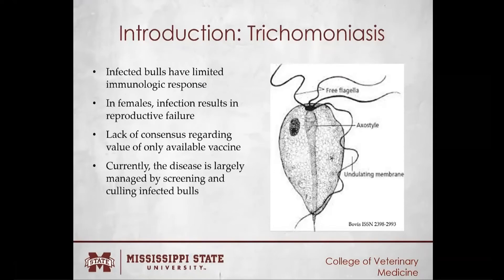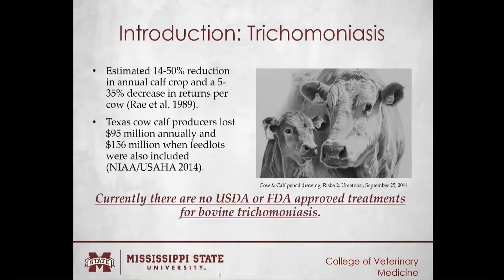There is a lack of consensus regarding the value of the only available vaccine. Currently, the disease is largely managed by screening and culling infected bulls. It is estimated through a simulation model that trichomoniasis causes a 14–50% reduction in annual calf crop per cow. In Texas, calf producers were estimated to have lost $95 million annually, and as much as $156 million when feedlots were also included. Currently, there are no USDA or FDA-approved treatments for bovine trichomoniasis.